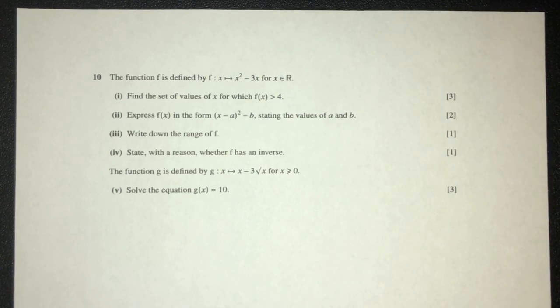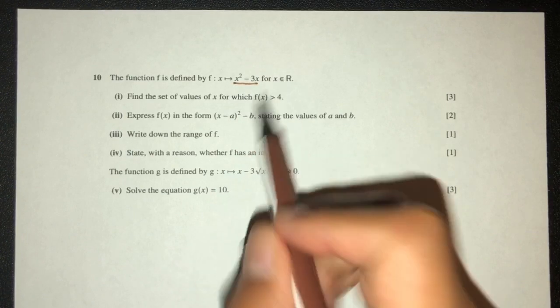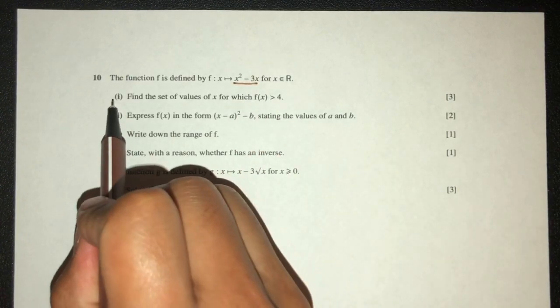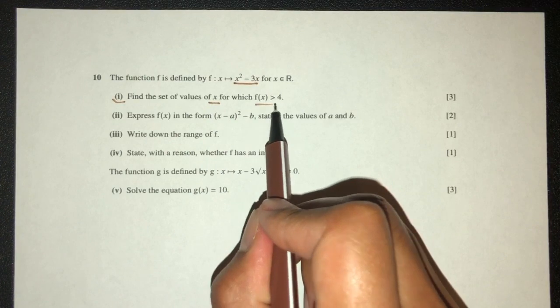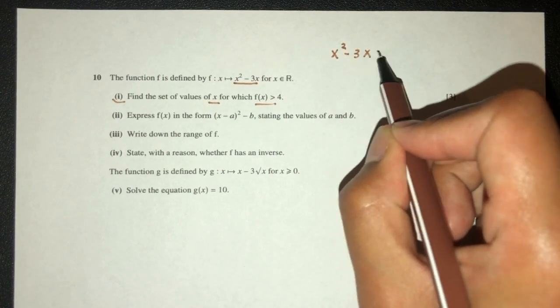So let's move on to this question. The function f is defined by f of x equal to this. Now x can take any values, that is great. Part one, we have to find a set of values of x for which this is true. So pretty easy, we have x squared minus 3x more than 4.